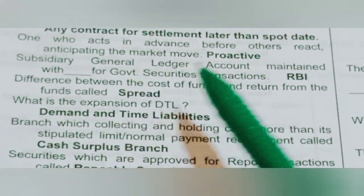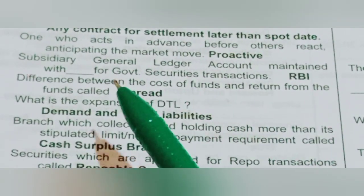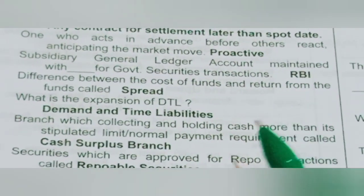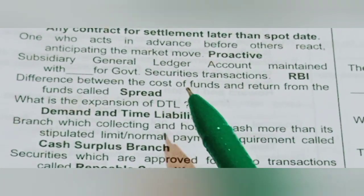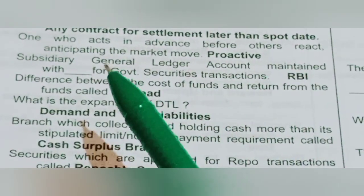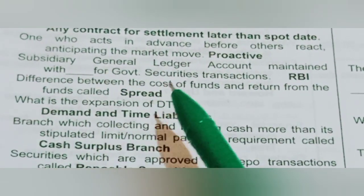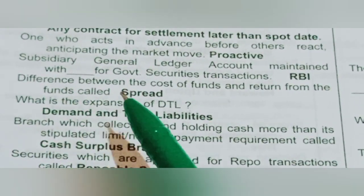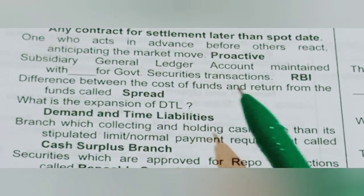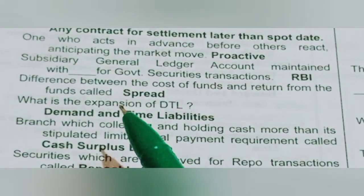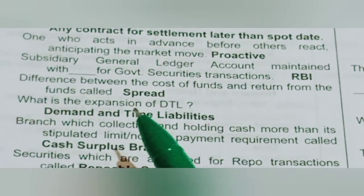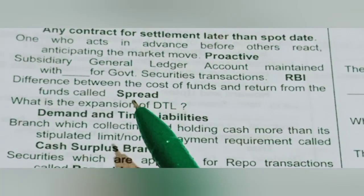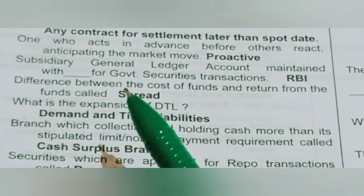A subsidiary general ledger account maintained with RBI for government securities transactions. Difference between the cost of funds and return from the funds is called dash — answer: spread.